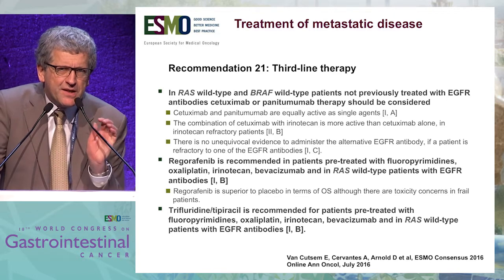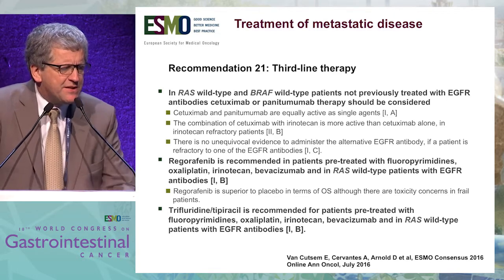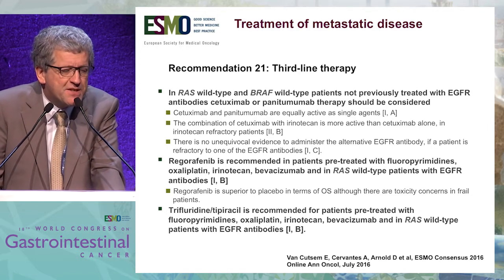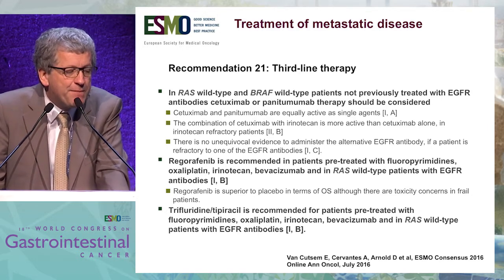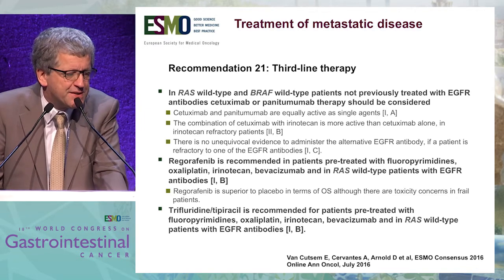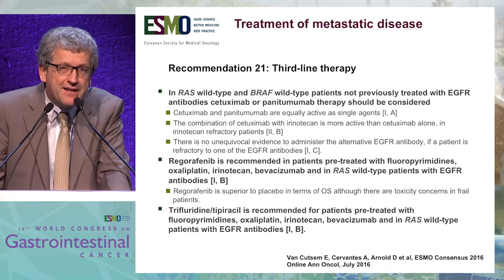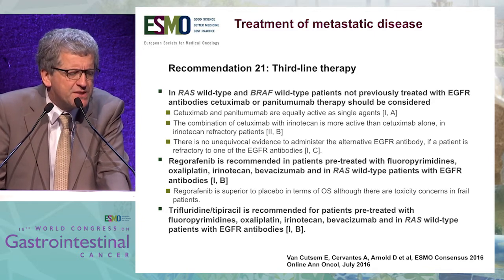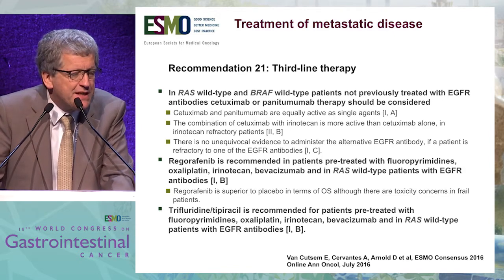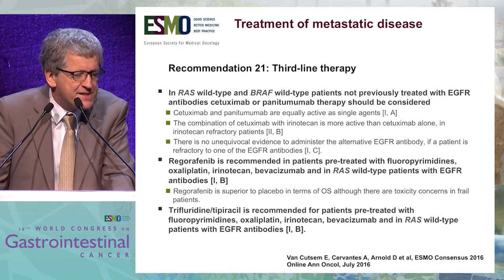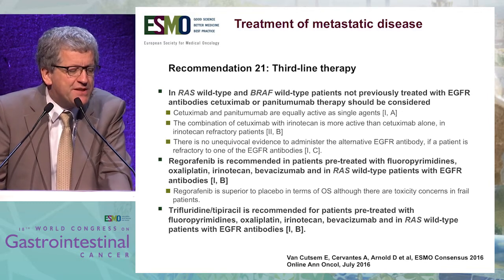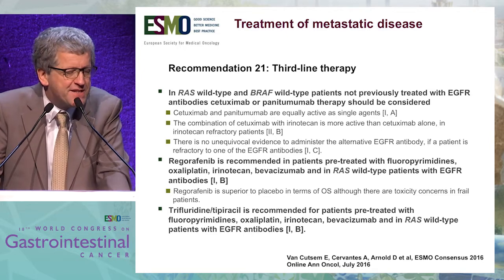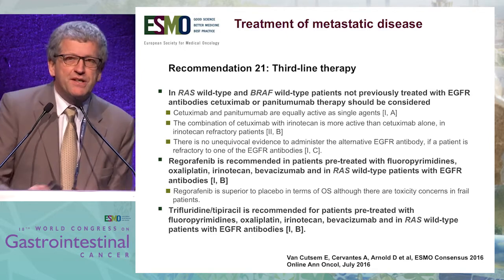Regarding third-line treatment: in RAS wild-type and BRAF wild-type patients not previously treated with an EGFR antibody, cetuximab or panitumumab therapy should be considered. Cetuximab and panitumumab are equally active as single agents. The combination of cetuximab with irinotecan is more active than cetuximab alone in irinotecan-refractory patients. There is no unequivocal evidence to administer the alternative EGFR antibody if a patient is refractory to the other EGFR antibody.